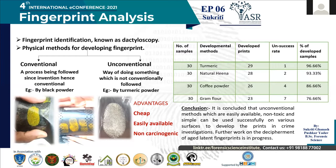Fingerprints are of three types: latent, patent, and plastic. Latent are the invisible ones. Patent are the visible ones, generally made by blood, ink, etc. Plastic are the prints on soft surfaces such as paint, wet mud, etc.